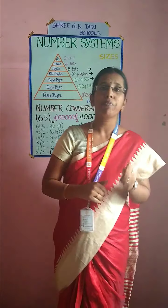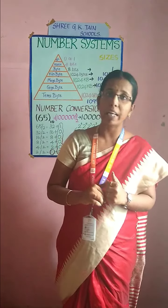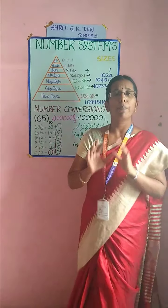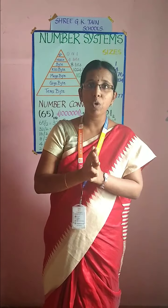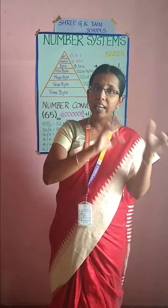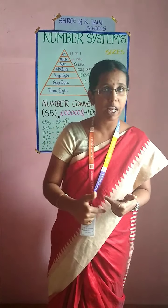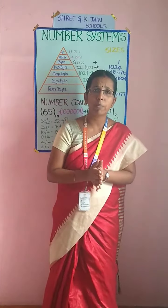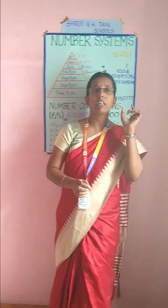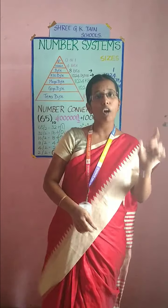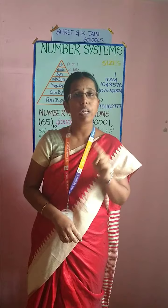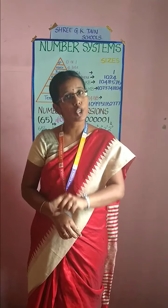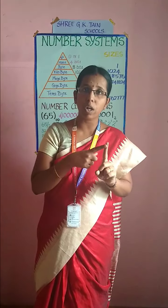Going to the number systems, you have 4 different types: decimal number system, octal number system, hexadecimal, and finally binary number system. Based on the count of numbers you have in each number system, that will be your base value. Base value is the count of the number of digits in that system.